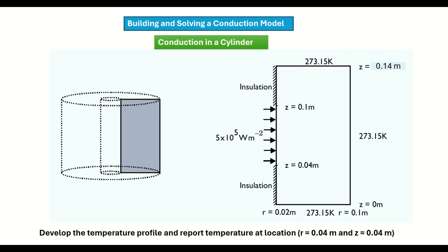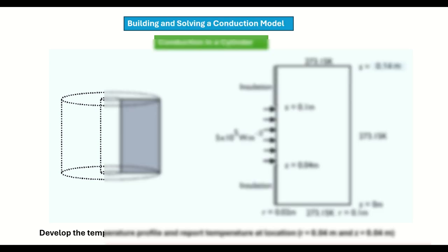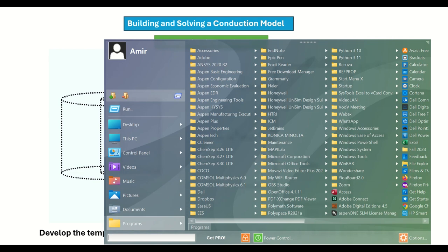The other sides are maintained at a temperature of 273.15 Kelvin. We are asked to develop the temperature profile in this geometry and report the temperature at a location of r = 0.04 meter and z = 0.04 meter. Now open COMSOL.